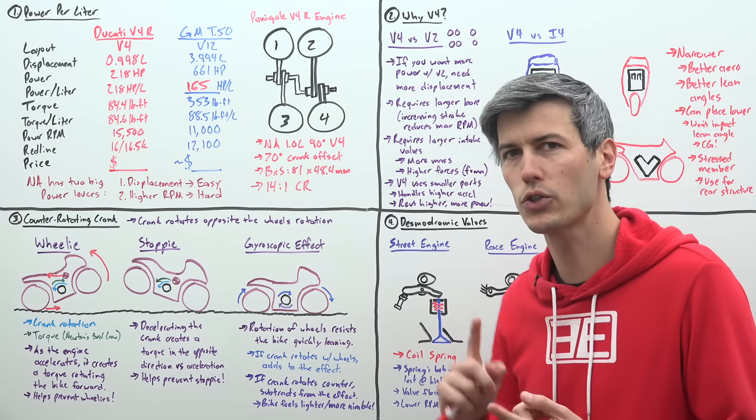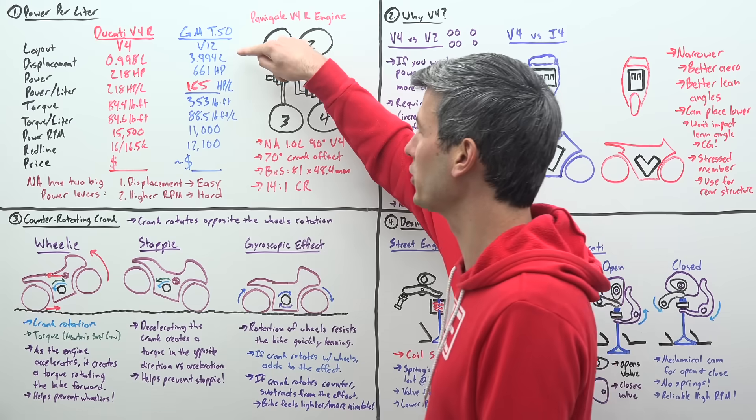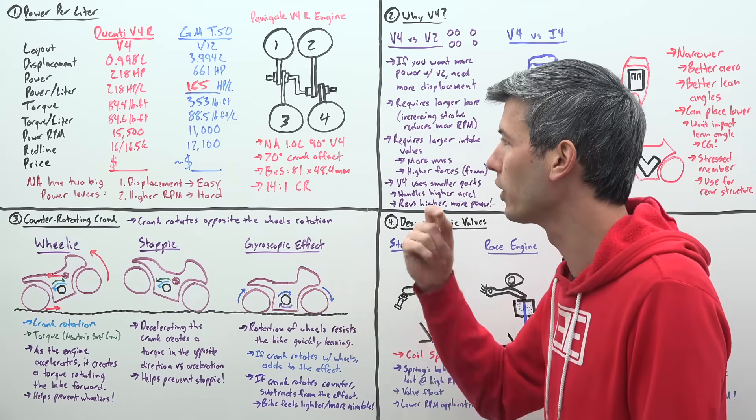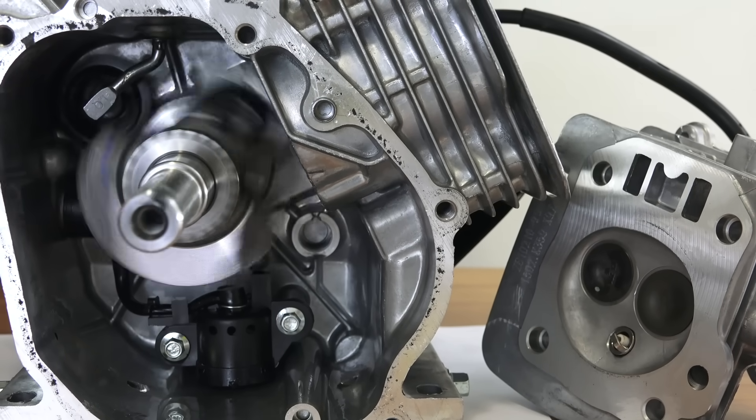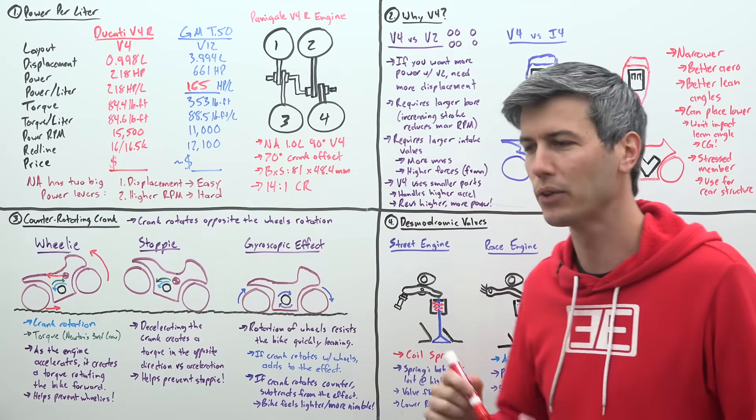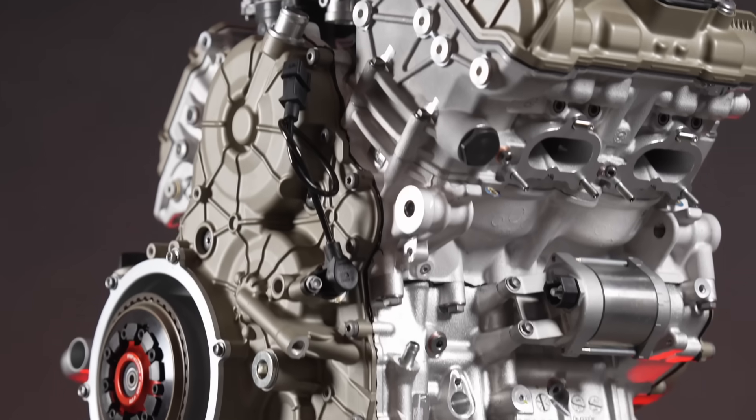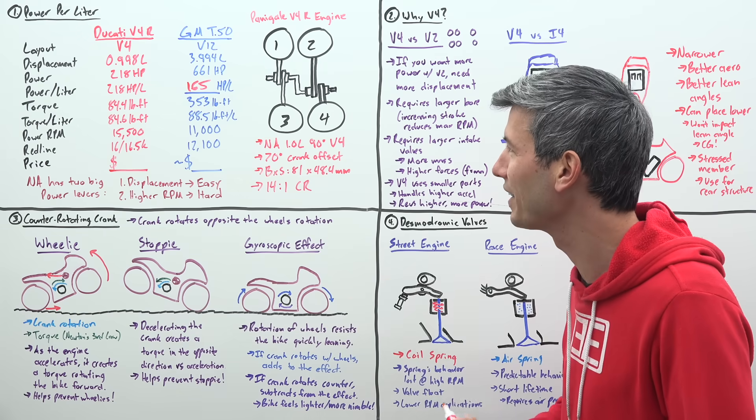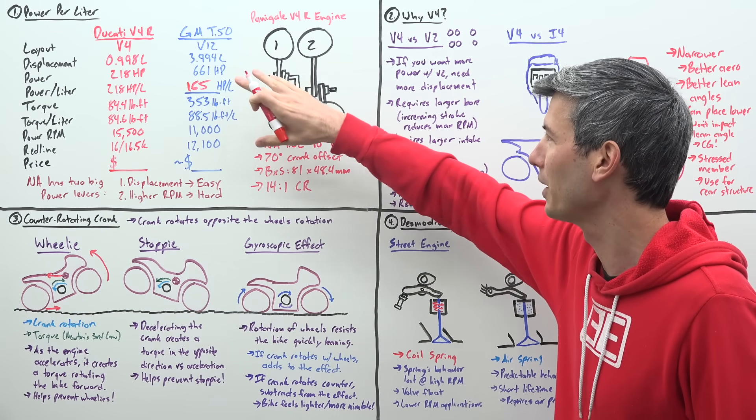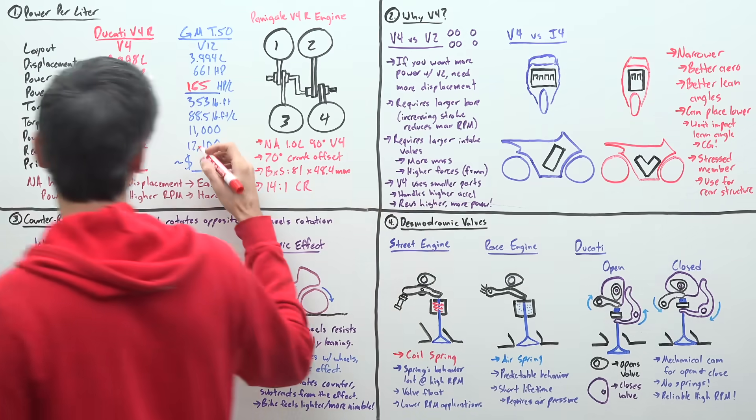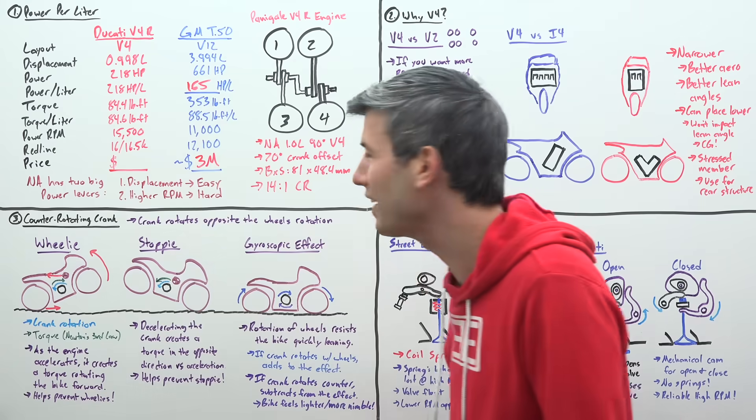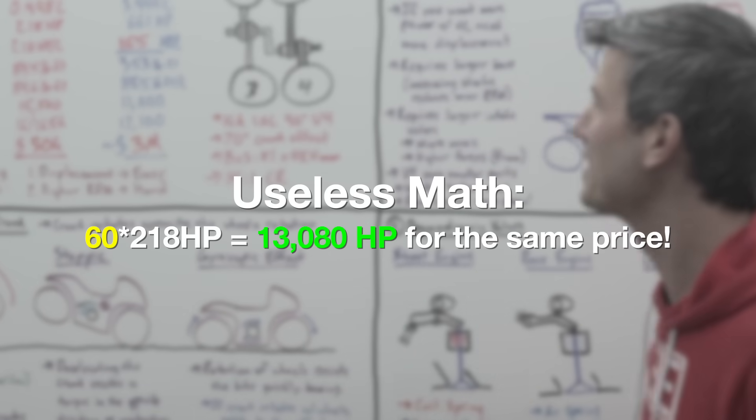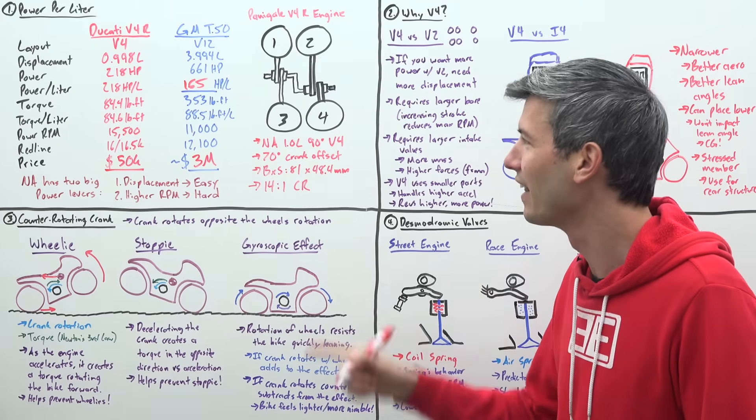So when it comes to naturally aspirated engines, there are two big levers you can lean on in order to increase power. Of course, you can make the engine larger, very easy. The bigger the engine, the more power you're going to make. Or you can make the engine rev higher. This is a more difficult way of increasing power, because as you start to rev higher, the engine just wants to destroy itself. So there's a real challenge in making an engine rev really high. And of course, that also brings up cost. If you want to make something rev really high, you start to use more exotic materials, and the price goes up. One of the interesting things about comparing the GMT-50 is that this is a vehicle that costs about $3 million versus this Ducati, which you can buy for $50,000. You can buy 60 of them for the same price, and you get this very exotic, very racy engine.